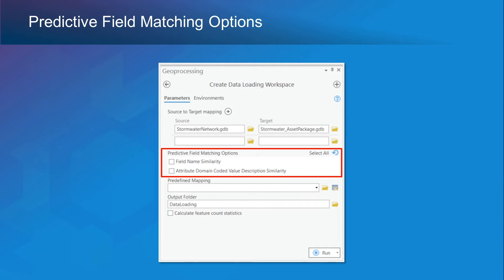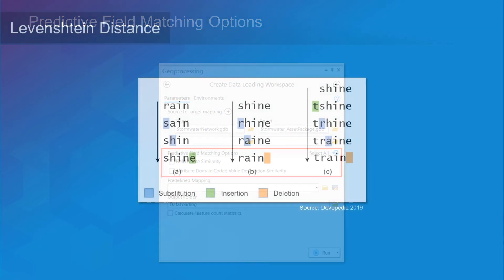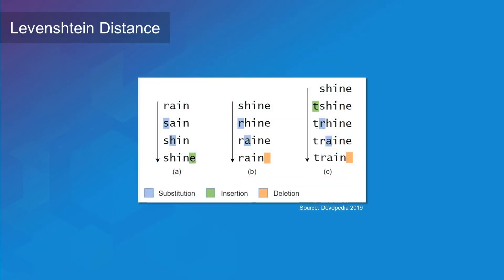The predictive field matching uses fuzzy logic built on top of the Levenshtein distance algorithm to match datasets, fields, and coded value descriptions between a source and a target. The Levenshtein distance algorithm is used to quantify how dissimilar two words are to one another by counting the minimum number of operations — such as removal, insertion, or substitution of a character — that is required to transform one string into another. For example, the distance between the words 'rain' and 'shine' is three, since there are three operations required, assuming all operations have the same cost of one. The smaller the distance, meaning the least amount of operations at the lowest cost, implies that there's a greater similarity between two words.